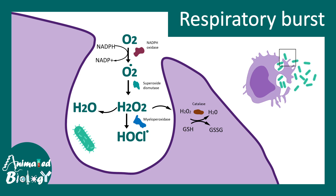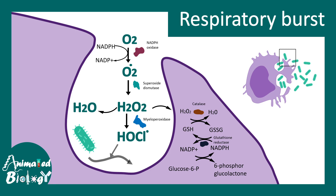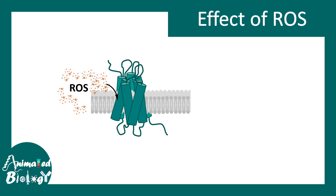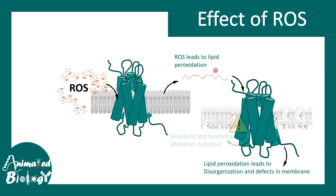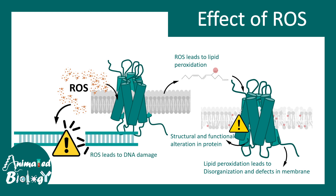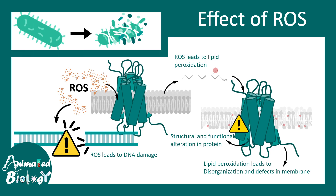H2O2 can further be converted into H2O, and this overall process requires glutathione, NADPH, and the important enzyme NADPH oxidase. ROS can do many things to damage and kill the pathogen: it can lead to lipid peroxidation, thereby damaging the membrane of the bacteria; it can cause structural disruption of membrane proteins; and it can lead to DNA damage. All these changes together lead to the killing of bacteria inside the engulfed phagosome of the macrophage.